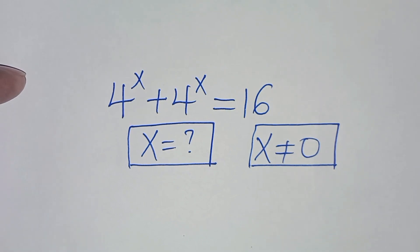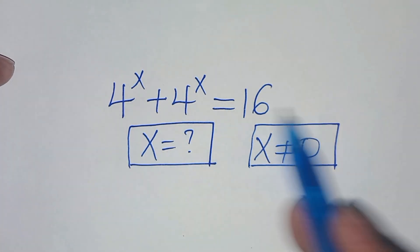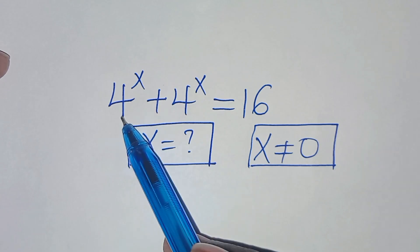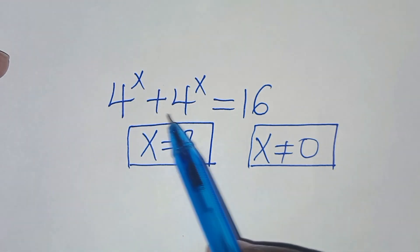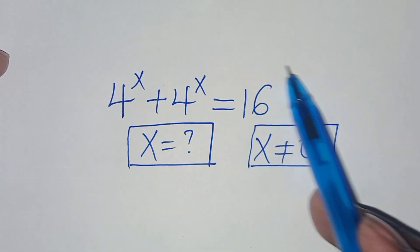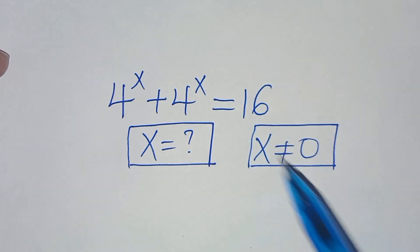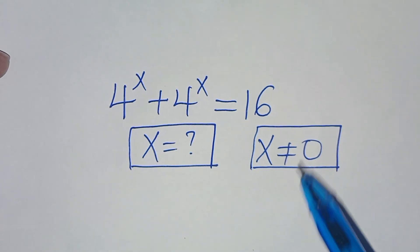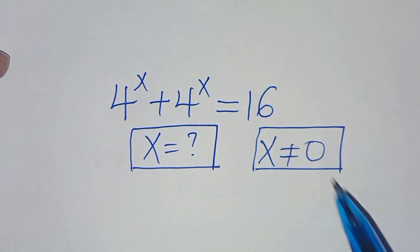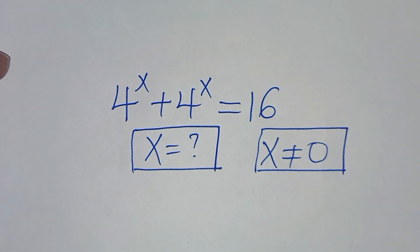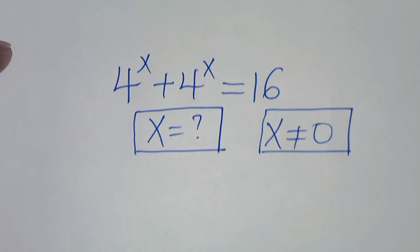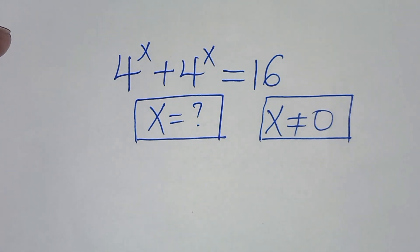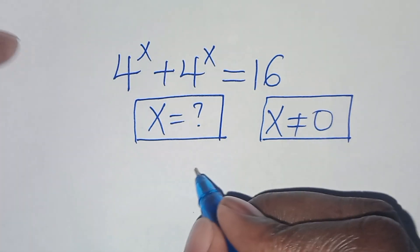Hello everyone, you are welcome to solve this nice exponential equation, which is 4 to the power of x plus 4 to the power of x, this is equal to 16. What is the value of x given that x is not equal to 0? We are going to solve this problem by applying two methods.